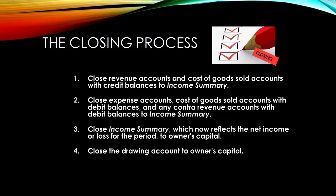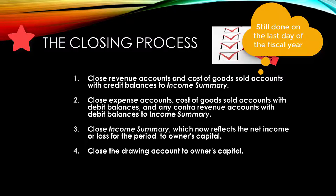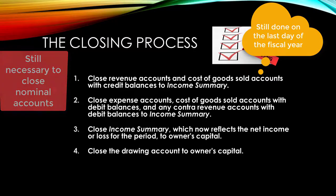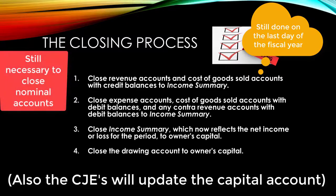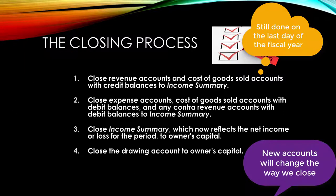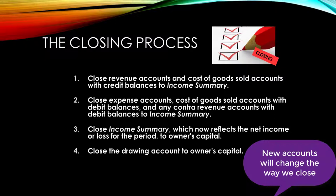Just as we learned at the end of chapter six, closing journal entries are necessary on the last day of the fiscal year. At the end of the period we need to close the temporary accounts — all the revenues, expenses, income summary, and drawing. The only difference now is we have a new set of accounts for a merchandiser and also quite a few contra accounts, so the steps will change a little bit.